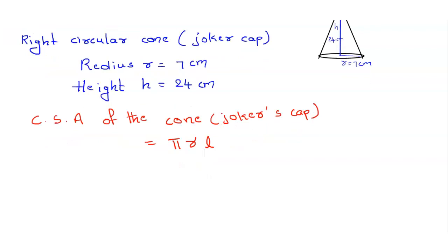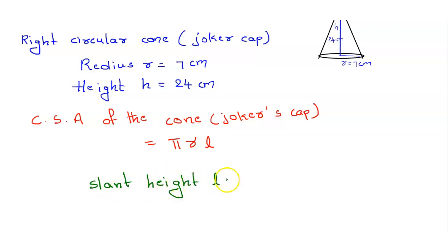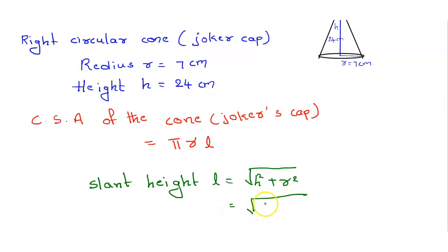We need the slant height — the l value. The slant height formula is: l is equal to under root of h squared plus r squared. So we substitute the two known values: h is 24, so 24 whole square, plus r is 7, so 7 whole square.